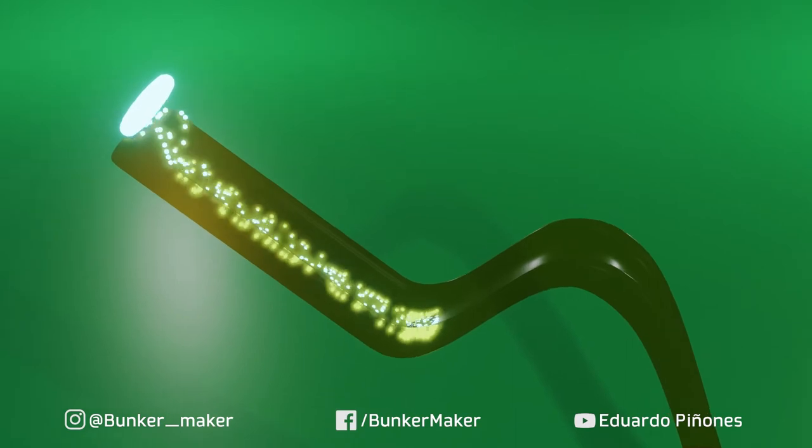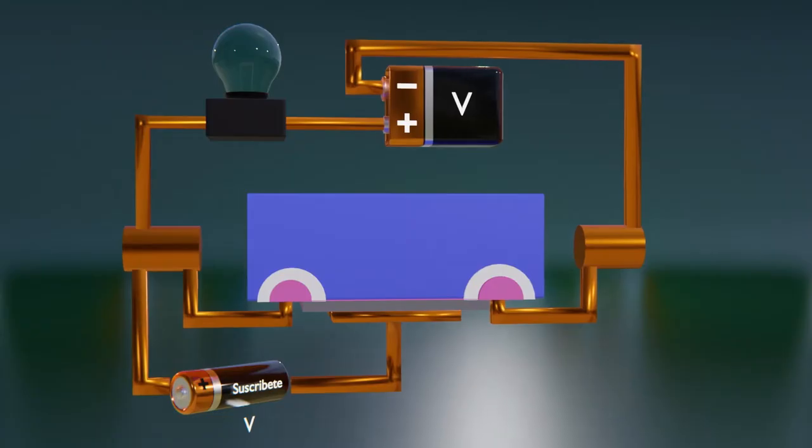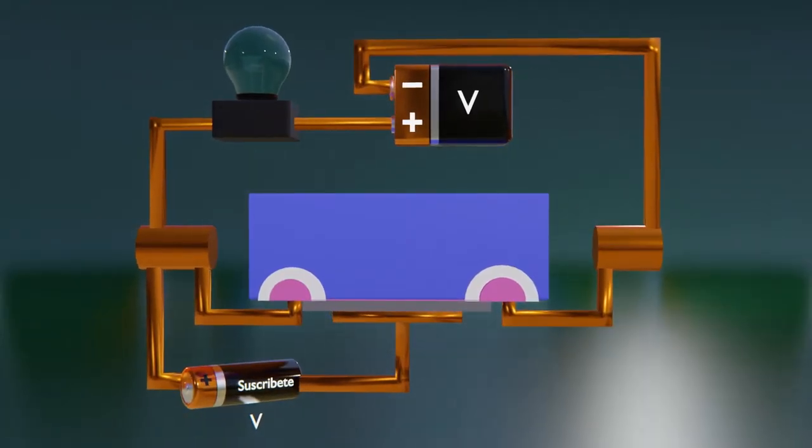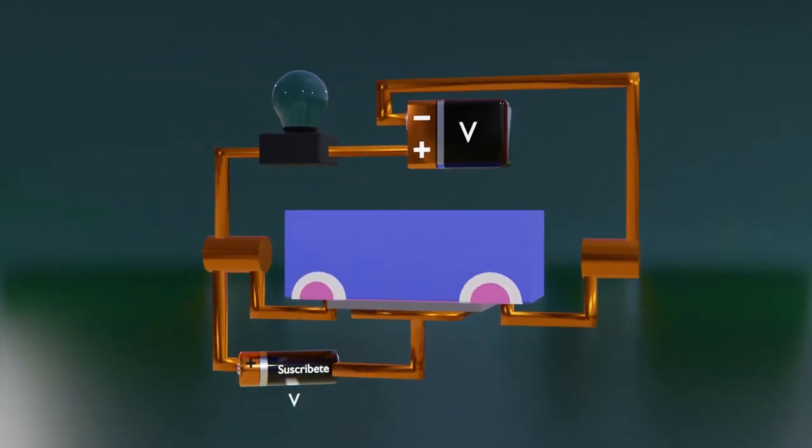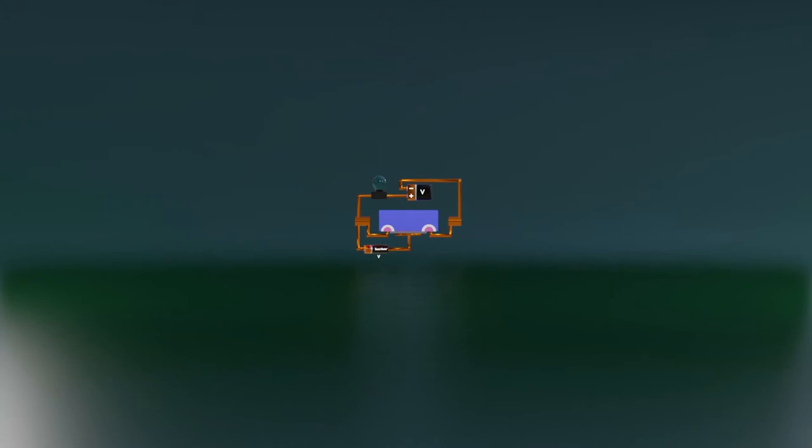Up until here everything continues to work as we saw in the previous episodes. But when we continue with Moore's law, decreasing more and more the size of the transistors, the distance of the channel between the source and the drain has become only a few nanometers long.